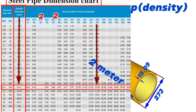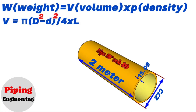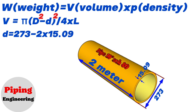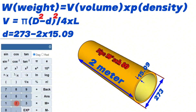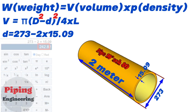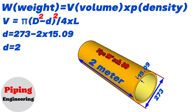Now we can calculate the inside diameter of this 10-inch pipe. The inside diameter equals the outside diameter 273 minus 2 times the wall thickness 15.09. Using the calculator, we find that 273 minus 2 times 15.09 equals approximately 243. So we calculated and found that the inside diameter of the 10-inch schedule 80 pipe in our example equals 243 millimeters.